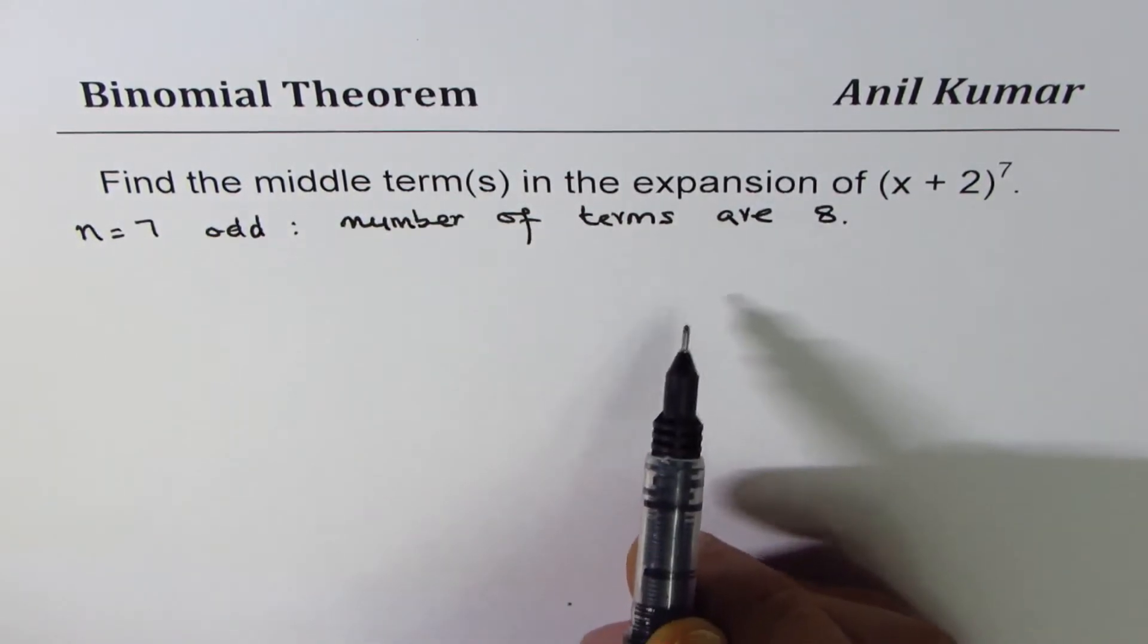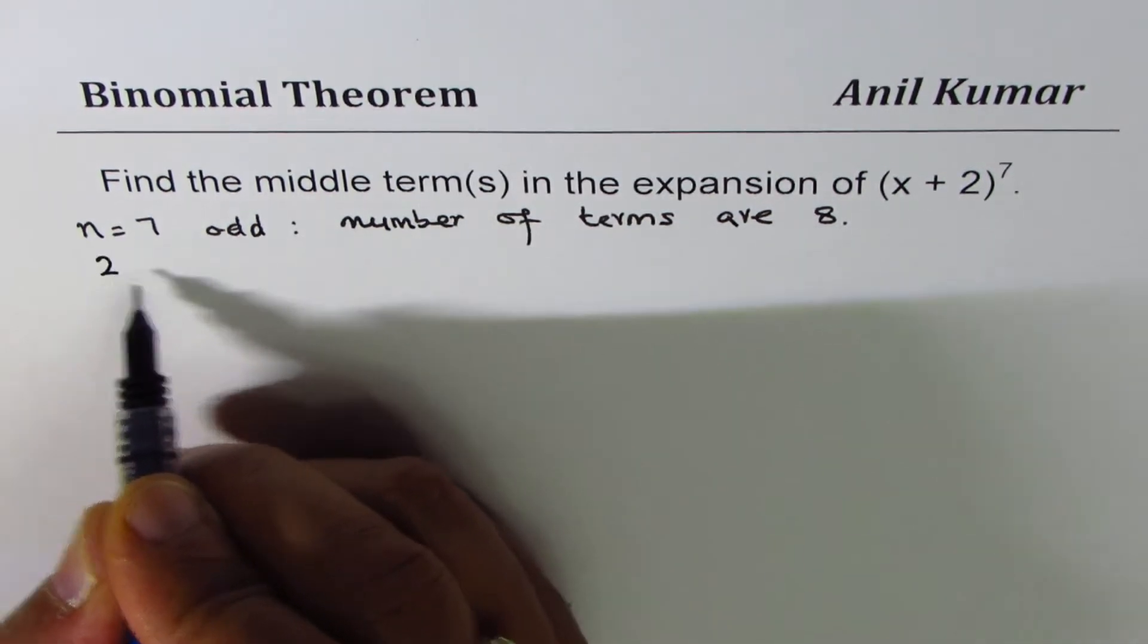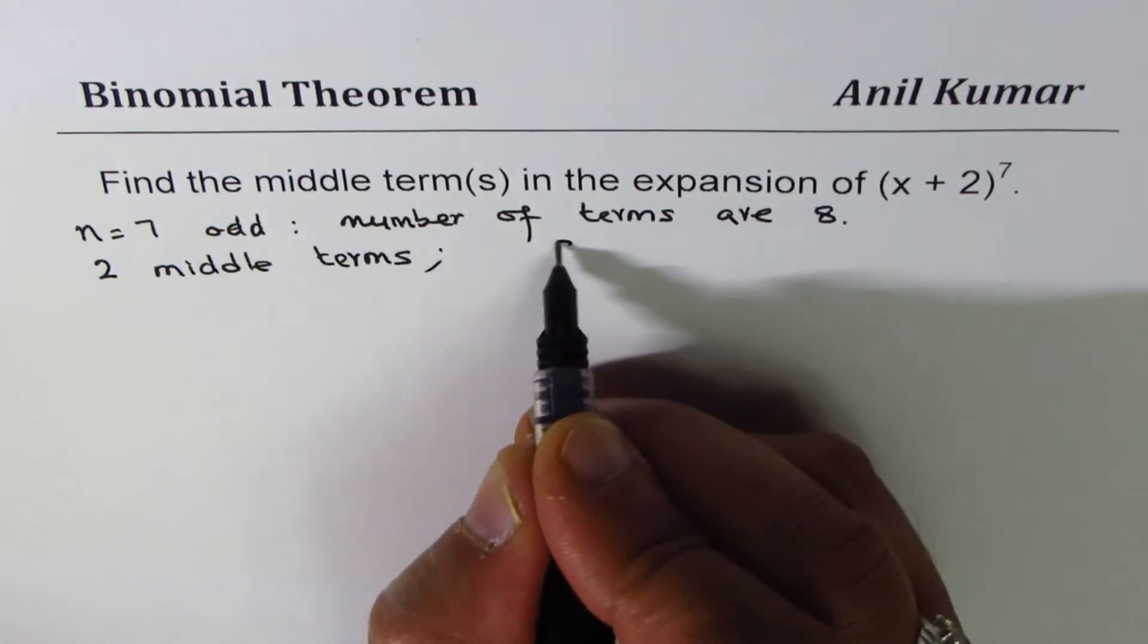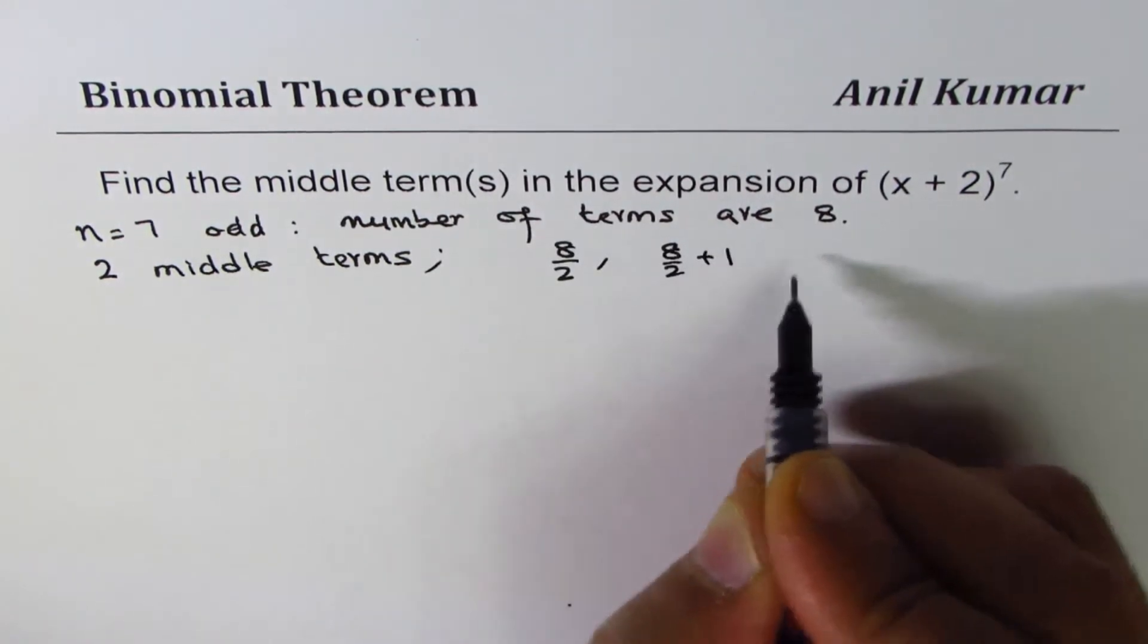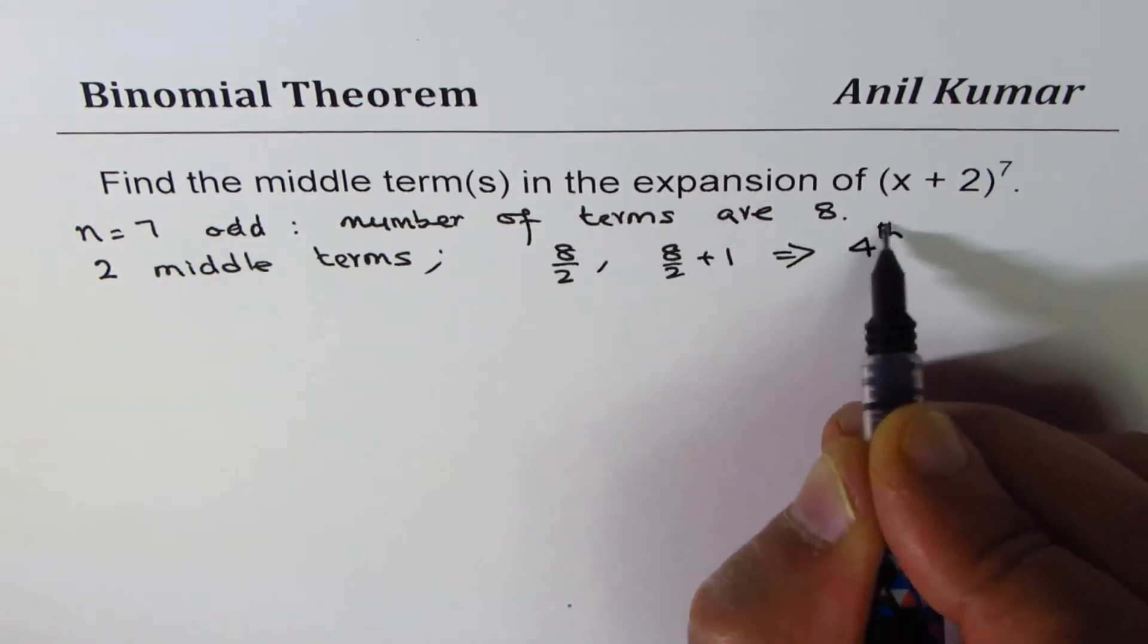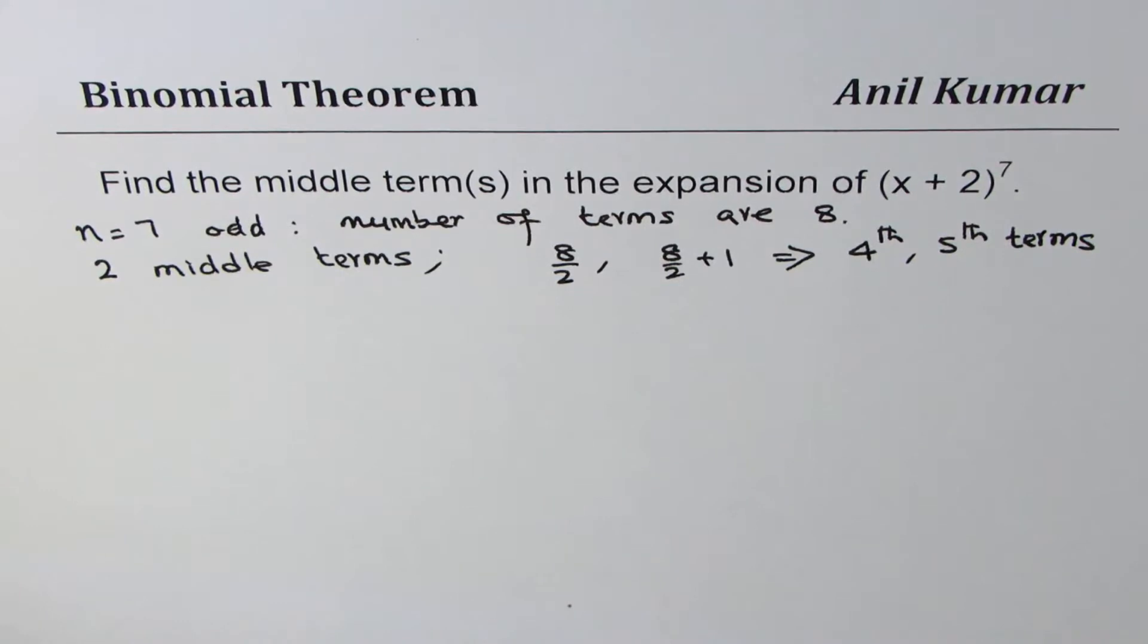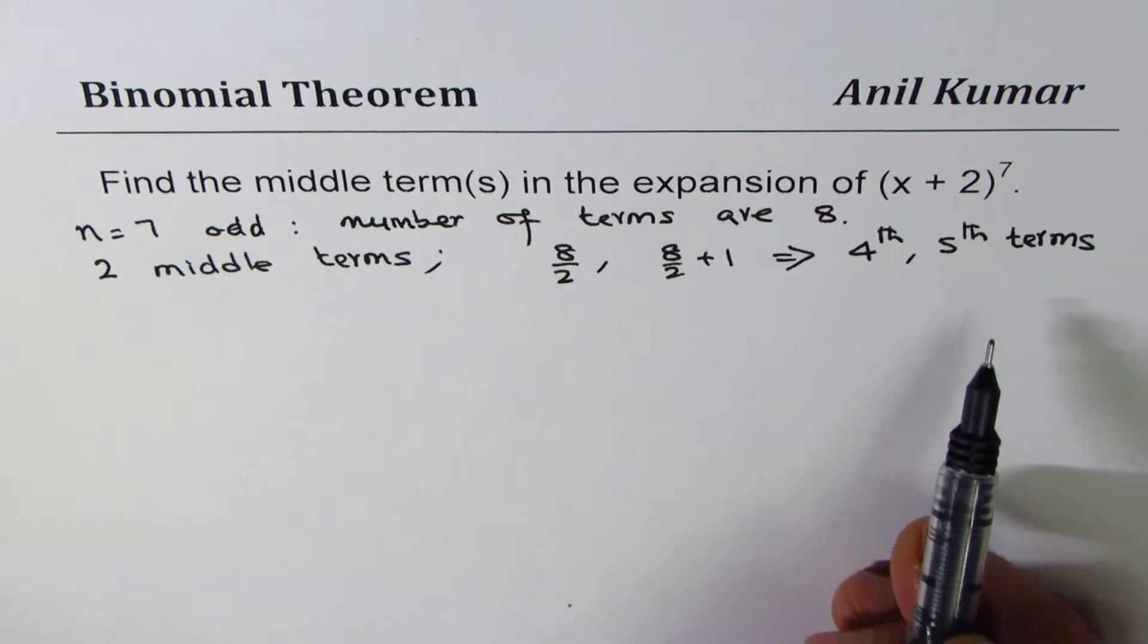Since there are 8 terms, there are two terms in the middle, so we are expecting two middle terms. And you can find them by 8 divided by 2, that's the first one. The other one is 8 divided by 2 plus 1, that is to say 8 divided by 2 is 4. So 4th and 5th terms are both considered to be the middle terms. So we'll find both these terms, the 4th and the 5th term.